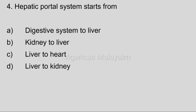Fourth question: Hepatic portal system starts from. Answer options — Option A: Digestive system to liver. Option B: Kidney to liver. Option C: Liver to heart. Option D: Liver to kidney. Correct answer: Option A, Digestive system to liver.